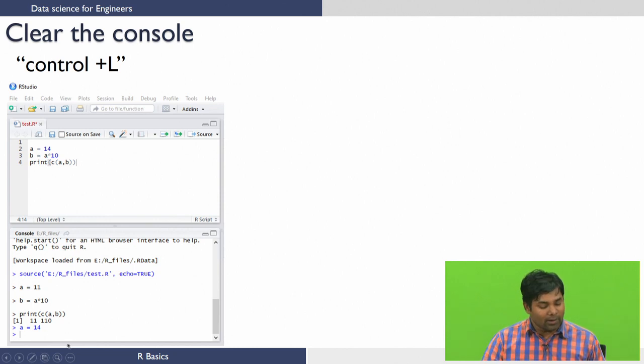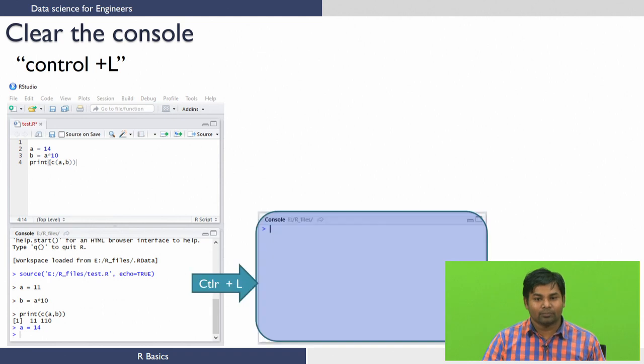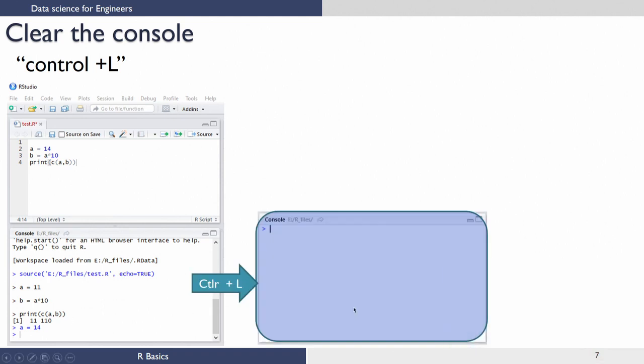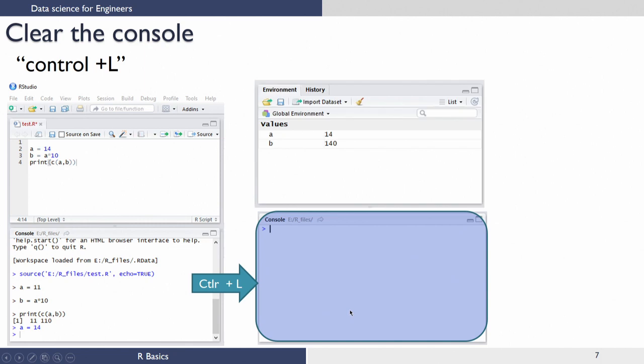Now let's suppose I want to clear this console. What I have to do is click here and enter the key combination Control + L. Once I do this, you can see that the console will get cleared. Remember, clearing the console will not delete the variables that are there in the workspace. You can see that even though we have cleared the console, in the workspace we still have the variables that were created earlier.